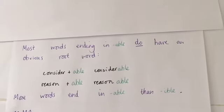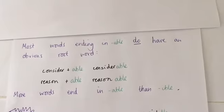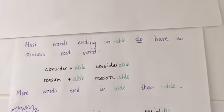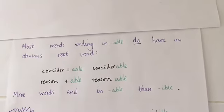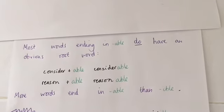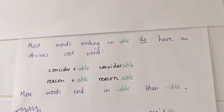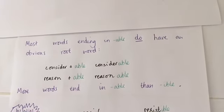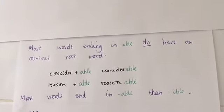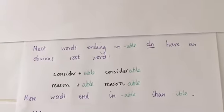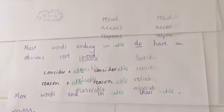Just so you know, more words end in -able than -ible, so there's a greater chance of -able. If you can see or know that there's an obvious root word, it's very likely going to be -able.